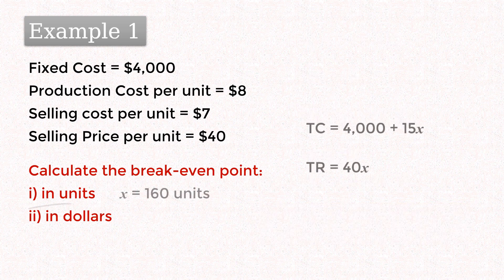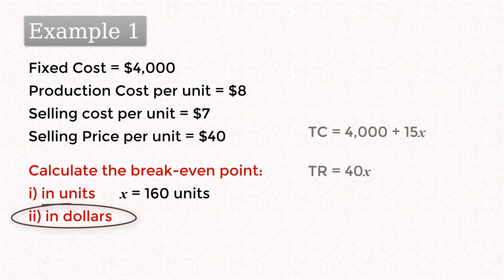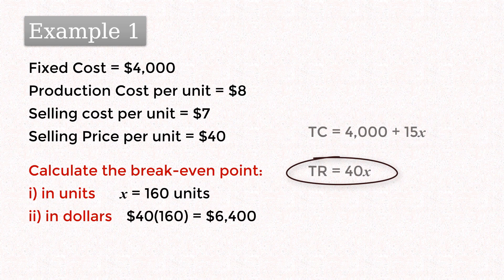We can then find the breakeven point in dollars by substituting the breakeven units of 160 into either the total cost function or the total revenue function. And that would give 6400.